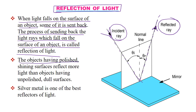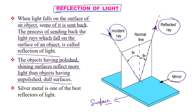The objects having polished shining surfaces reflect more light than objects having unpolished dull surfaces. यदि surface polished है यानि mirror है, तो वो mostly light को reflect कर देगी, लेकिन यदि unpolished dull surface है तो mostly light को reflect नहीं कर पाती. Best reflection के लिए जरूरी है कि surface polished हो या mirror हो. Silver metal is one of the best reflectors of light.